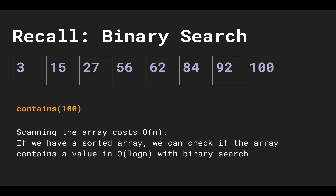Here we have a sorted array from 3 to 100, and if we want to search — let's say we call a method called 'contains' — the contains method returns true if 100 is in the array and false otherwise. Before binary search we could perform a linear scan which costs O(n), but with a sorted array we can perform binary search which runs in O(log n) time.